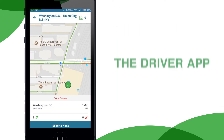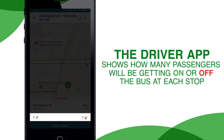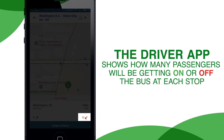Furthermore, the driver app shows how many passengers will be getting on or off the bus at each stop. The number next to the green arrow on the bottom left side of the screen represents the number of passengers getting on the bus, and the red arrow at the bottom right side represents the number of passengers getting off the bus.